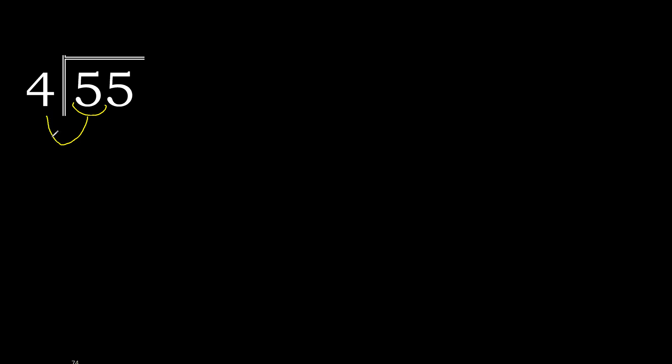55 divided by 4. Starting with 5: 5 is not less, so with 5, find which number multiplied by 4 is nearest but not greater. 4 multiplied by 2 is 8 — that's greater. 4 multiplied by 1 is 4 — not greater. So 1 is the answer. 5 minus 4 is 1, remainder 1.